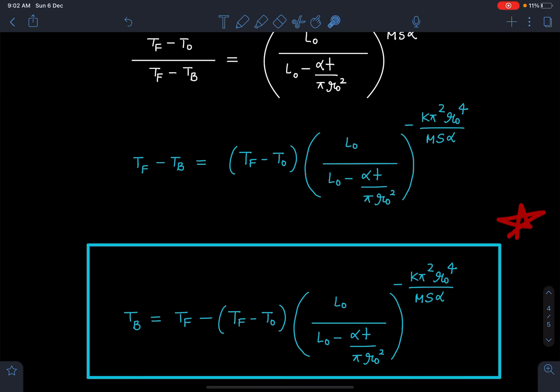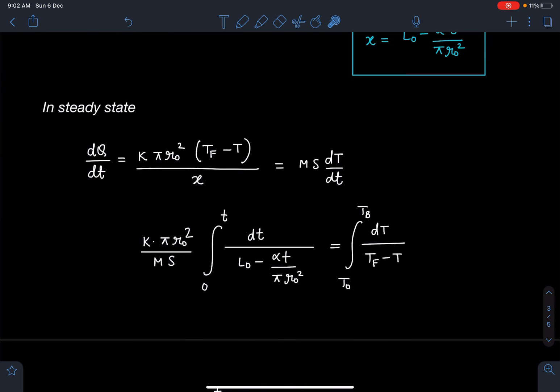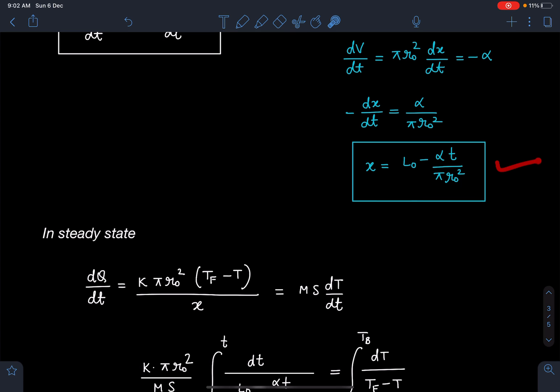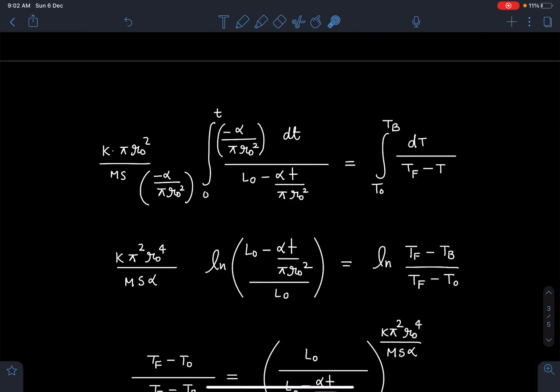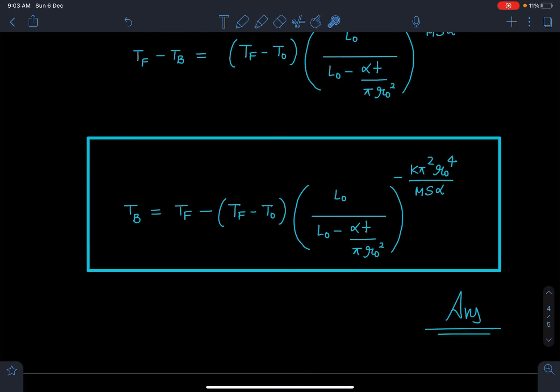There could be a question like this also: when candle is burning completely, what is going to be the temperature of the block? You can find out when x is going to be 0. When x is going to be 0, you know the time, so when you substitute that time value here, you will get the answer for temperature of block at that moment.